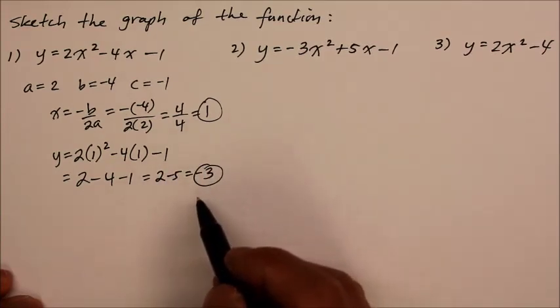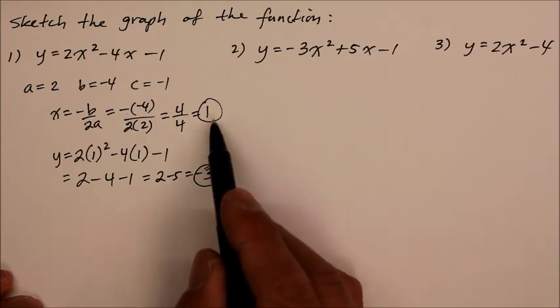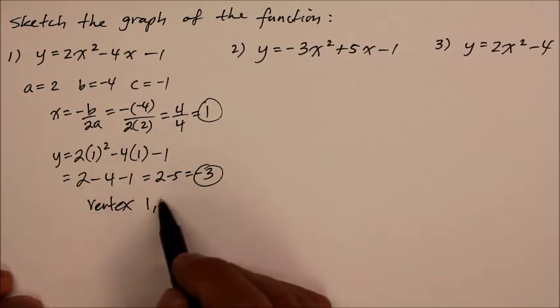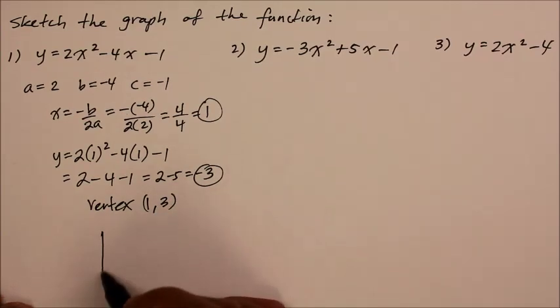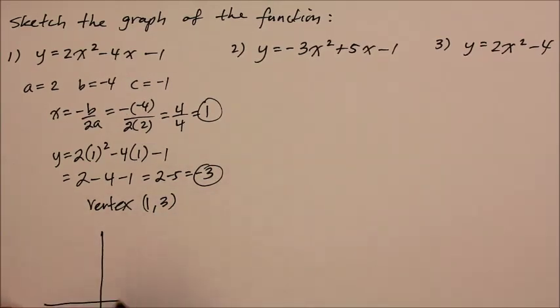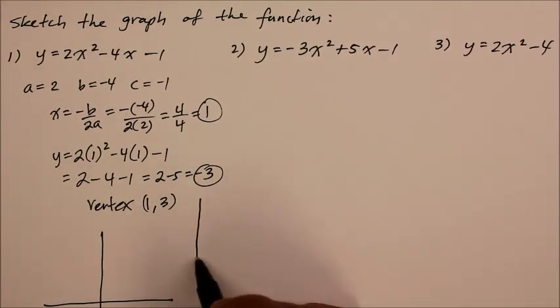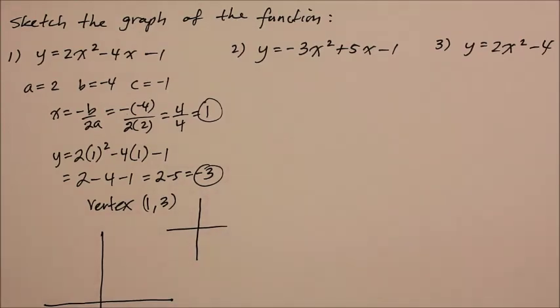So the vertex, the coordinate is x and y is 1 and negative 3. Now we can get a better idea of what the quadratic is supposed to look like.